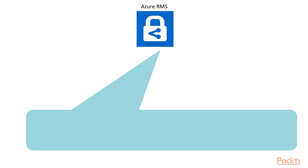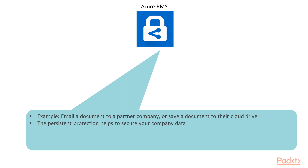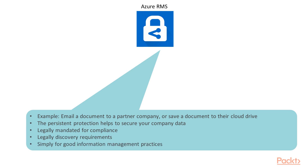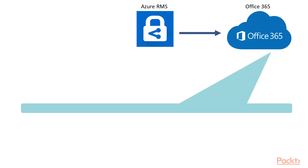Let's start with Azure Rights Management Service. Employees might email a document to a partner company or save a document to their cloud drive. The persistent protection that Azure Rights Management Service provides not only helps to secure company data, but might also be legally mandated for compliance, legal discovery requirements, or simply for good information management practices. Azure Rights Management Service provides the rights management capabilities of Office 365, providing easy configuration and enforcement of information protection policies.